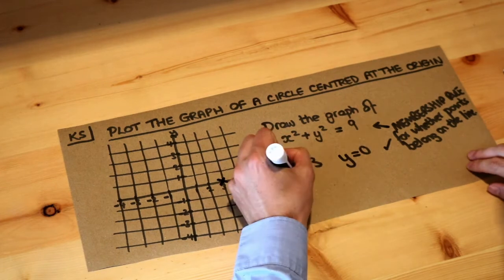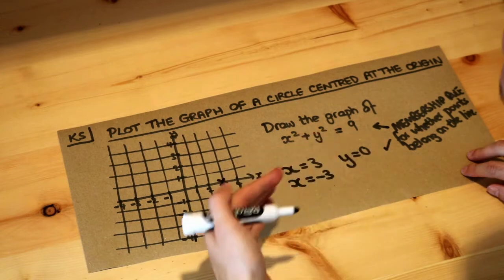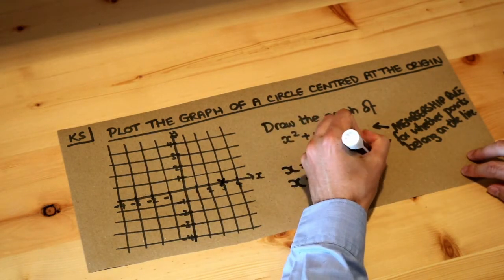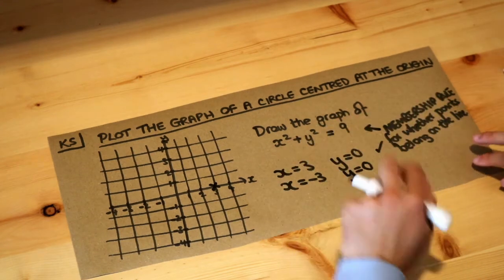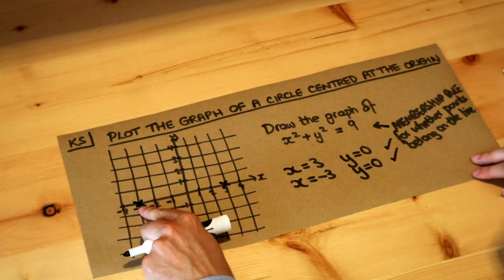But there's other points we could also choose. If we had x is minus 3, minus 3 squared, well minus 3 times minus 3 is positive 9, and y would be 0 again. So if I substitute these values into this equation, again that would be a point on the line. So we can plot minus 3, 0, which will be there.